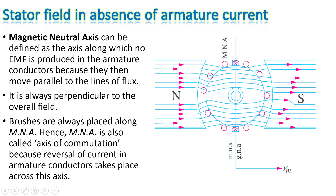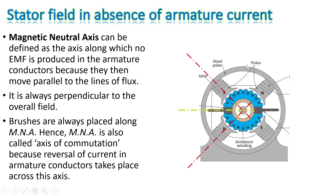On one side of the magnetic neutral axis the current is negative, and on the other side it is positive. In a four-pole machine, the magnetic neutral axis is in between the north and south poles, and the brushes are placed along this axis to collect the current.